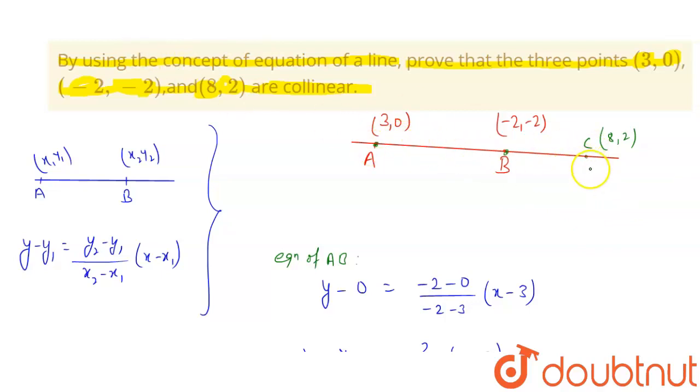Hence you can say all these three points are on the same line. That's why we can say all these three points will be collinear. Hence proved, thank you.